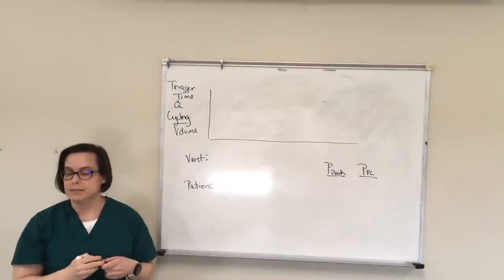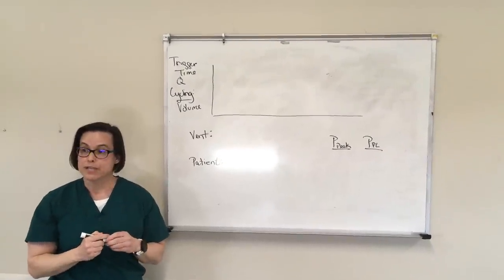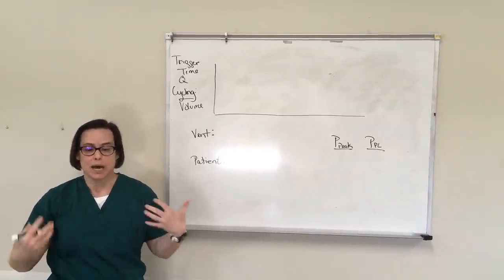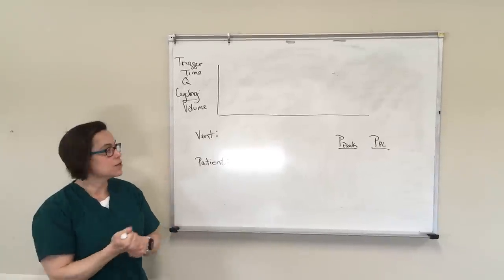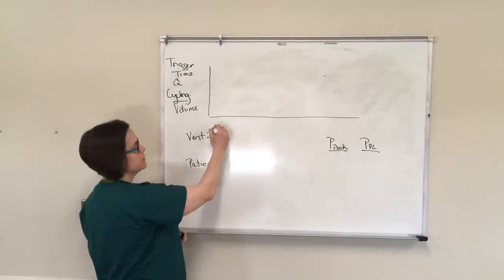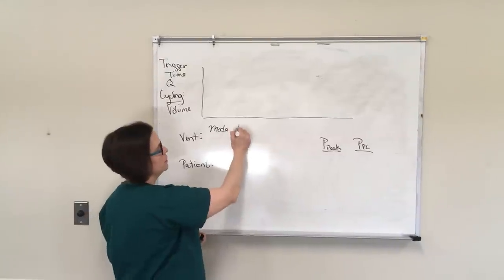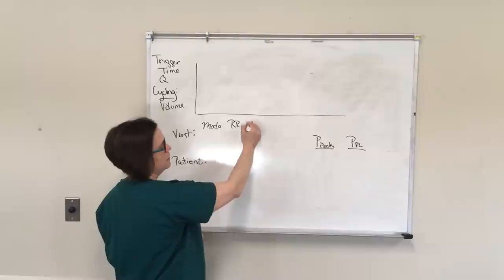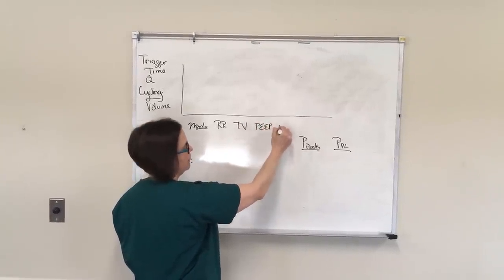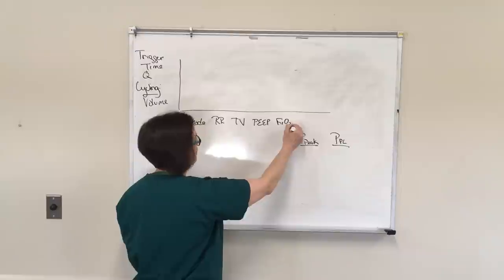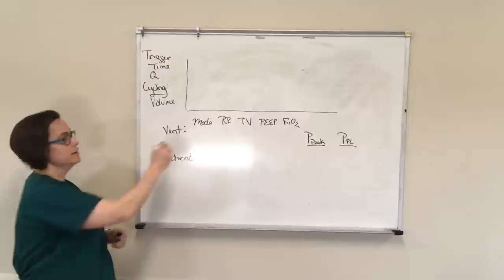But just keep that in mind as some basics. So the key thing you need to know when you're setting up a ventilator is how to approach those settings and ask for the right thing and set the right thing. So whenever you're doing that, I always want you to think of it as the mode, the respiratory rate, the tidal volume, the PEEP, and the FIO2. So your mode is for us, all we're doing today is ACVC.